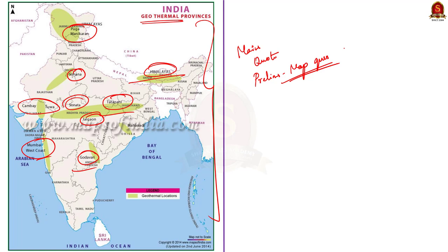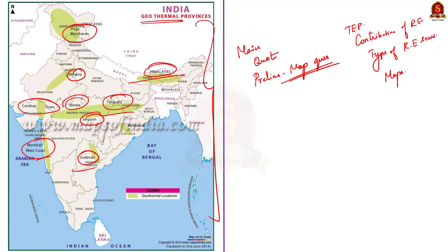In this discussion, we saw about the total energy production in India, the contribution of renewable energy to total energy production, the contribution of various renewable energy sources to renewable energy power production, and different maps regarding the sources of different renewable energy sites in India. Now let us move to the next article discussion.